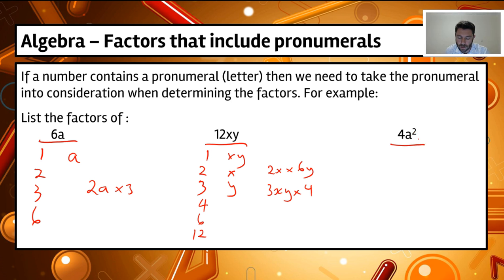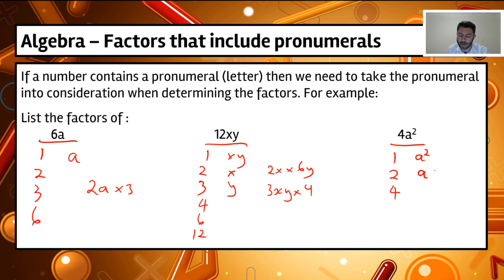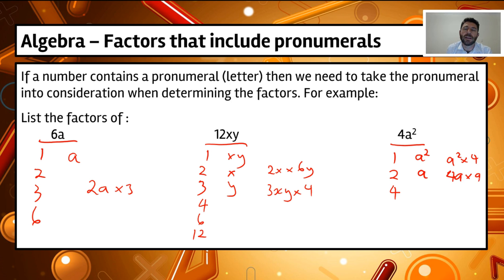The last example here is 4a squared. The numeric factors are 1, 2, and 4, because 2 times 2 is 4. For a squared, the factors are a squared itself and also a times a, so a is another factor. Factor pairs here could be a squared times 4, or 4a times a. Those are some of the different factor pairs for 4a squared.